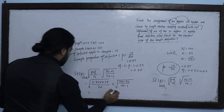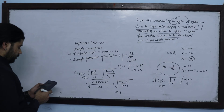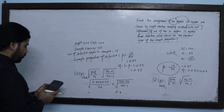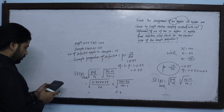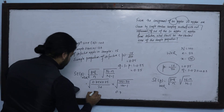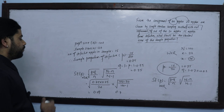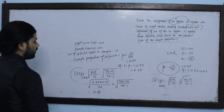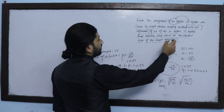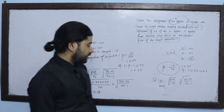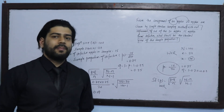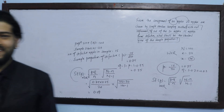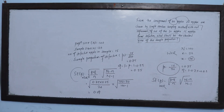The result is 0.75 into 0.25 upon 20, multiplied by 99, giving approximately 0.09. Thank you.